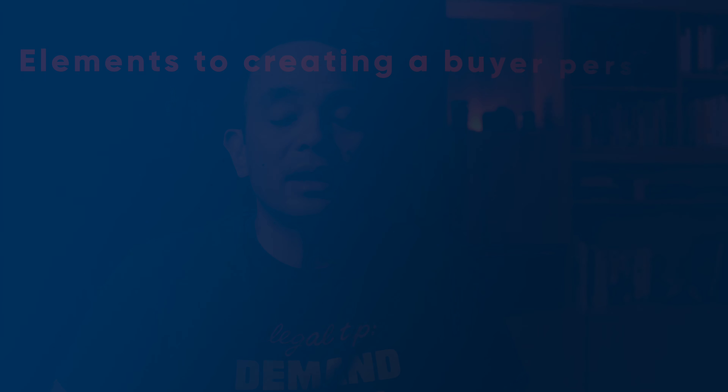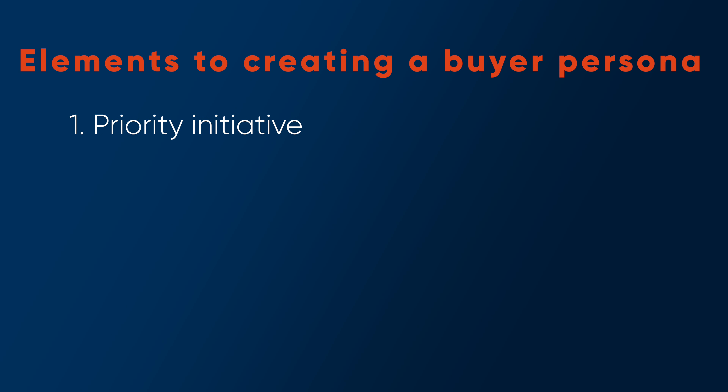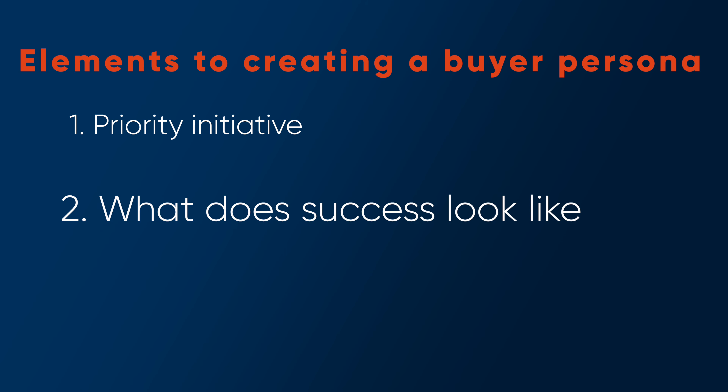She goes through five key steps on how to find and understand your buyer. That includes: first, the priority initiative — why that person or brand started the search for the potential solution your business could provide. Second, what does success look like in the buyer's mind — what do they hope to achieve when they make this purchase? Third, perceived barriers — what are the obstacles and challenges that prevent your target audience from making the purchase, maybe doing nothing, or maybe going with a competitor?